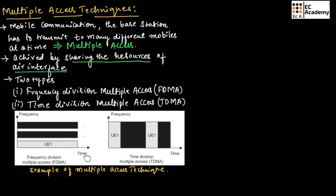In FDMA, at the same time, the frequency bands are divided into different slots. These slots are allotted to users for access of information. In time division multiple access, a single frequency band is allotted to multiple users at different time slots, as shown in the figure.